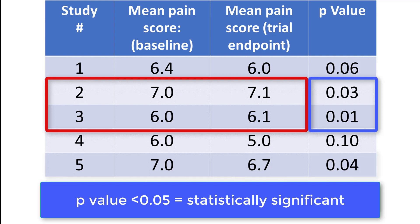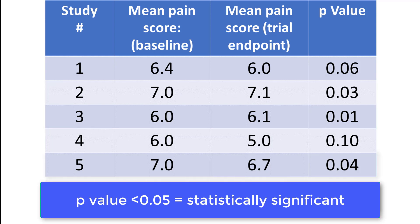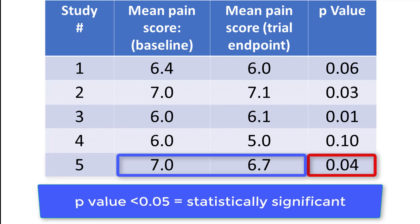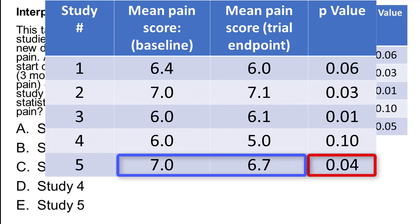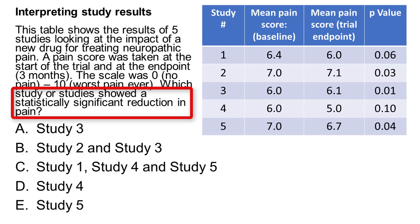If we look at study 5, the p-value is 0.04, so it is statistically significant, and the mean pain score has decreased. The question asked for which showed a statistically significant reduction in pain. Studies 2 and 3 were more statistically significant, but they showed an increase in pain. So the correct answer is study 5, which is E.